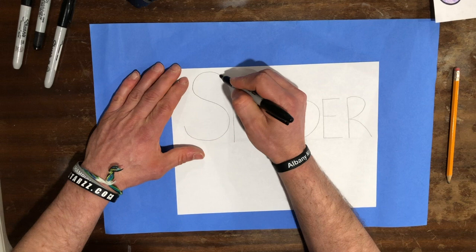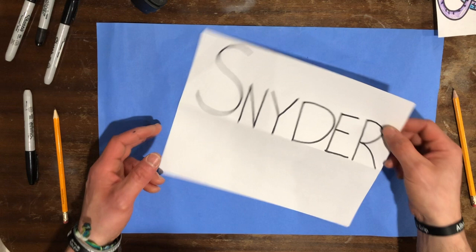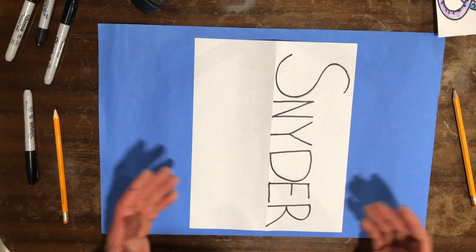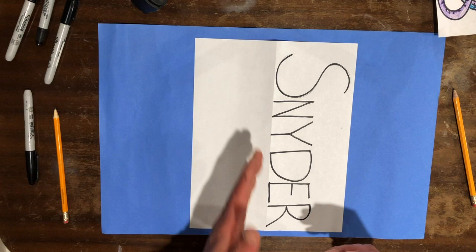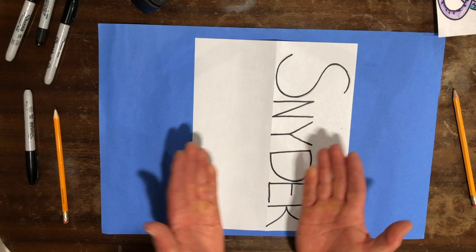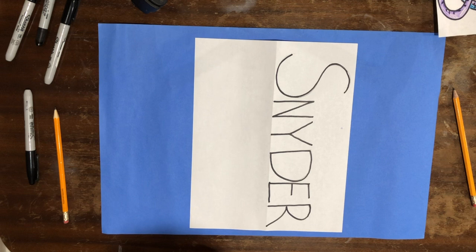Once you're happy with the pencil lettering, take a Sharpie and outline it. The next step is important: because this is a mirror image symmetry artwork, we want the two halves to be identical. So I'm going to have to write my name on the other half — but not only write it, I also have to do it in reverse, so the two halves can fold up on top of each other and be the same. That could be really daunting, but I'm going to show you a quick easy trick.